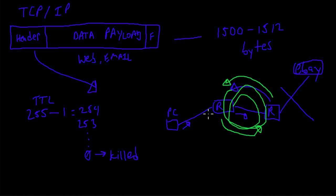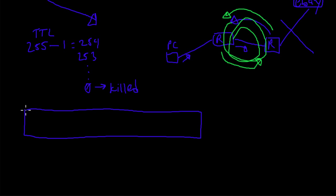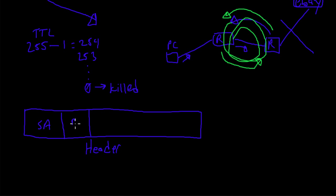Continuing down into the header, we've got a source address and a destination address. The source address, sometimes labeled SA, is the IP address of the sending computer or router. The destination address is the IP address of the final destination. Both are pretty self-explanatory.